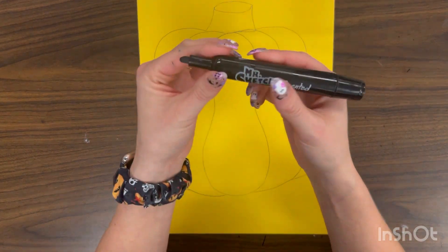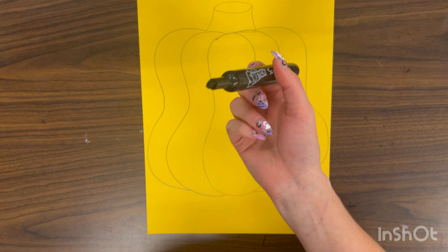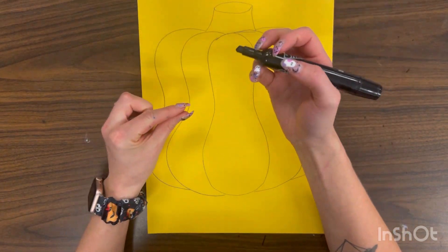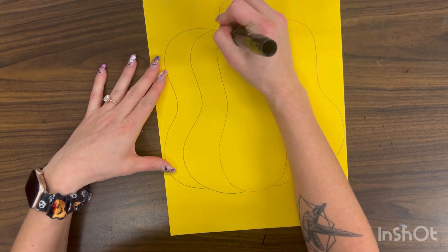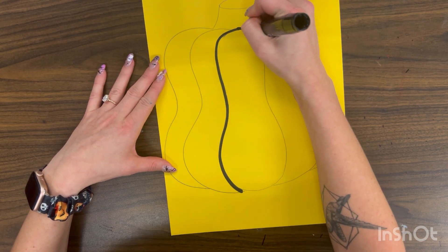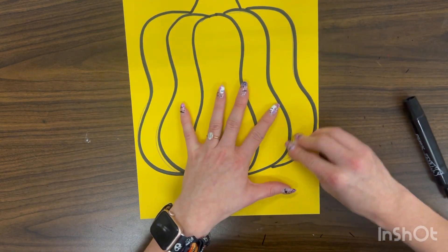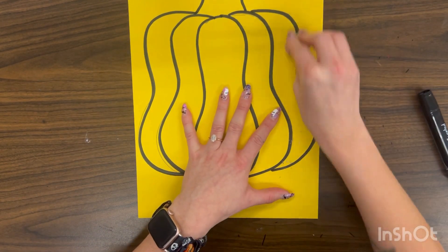we're going to trace it. Today we're going to be using nice thick black markers, not our normal skinny Sharpies, but a thick black marker. I'm going to outline my pumpkin, and then I'm going to erase any extra lines that I have hanging out.